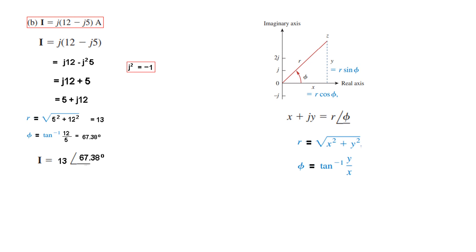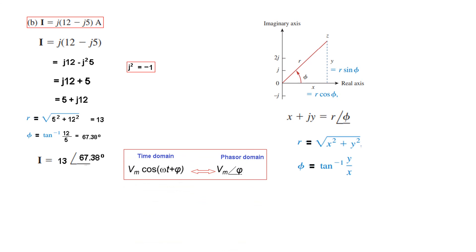So the phasor in rectangular form is now in polar form: 13∠67.38°. Using the conversion formula, in the time domain it becomes 13·cos(ωt + 67.38°). When you learn to use a calculator, converting 5 + j12 from rectangular to polar will give you 13∠67.38° directly. I hope you have been able to follow this question and can solve this type of question easily by following these steps. Thank you.